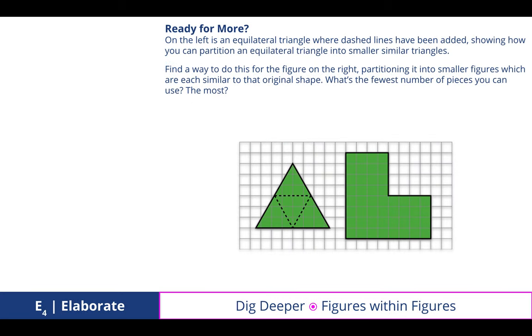Digging deeper, on the left is an equilateral triangle where dashed lines have been added, showing how you can partition an equilateral triangle into smaller, similar triangles, meaning it's made up of the exact same shape, but smaller. So, I showed you one version on the right side with that L shape, using a scale factor that's half the size. And I challenged you to dig deeper and be able to fill in that shape with smaller Ls that are one quarter the size. Pretty cool.